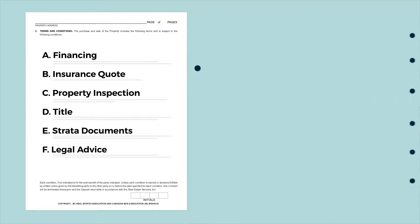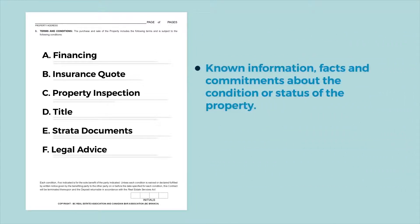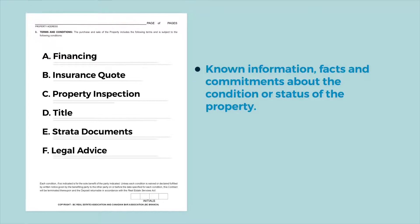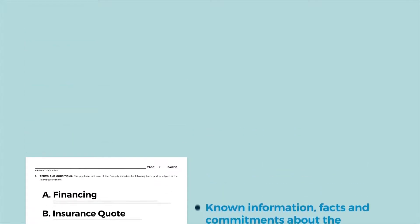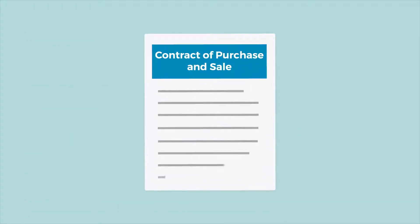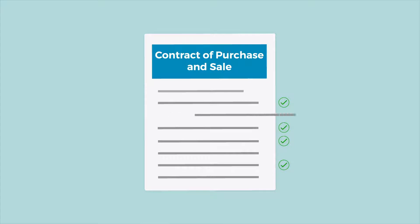This section may also include known information, facts, and commitments about the condition or status of the property. The contract of purchase and sale should include all terms of the agreement between the buyer and the seller regarding the transfer of the property. Terms not included in the contract will likely not be binding on the parties. Matters that are not between these parties may best be documented outside the contract of purchase and sale.